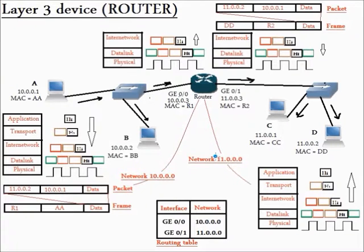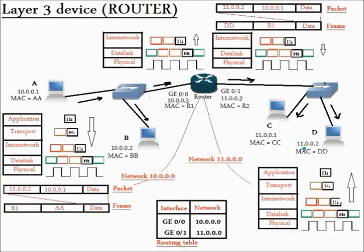In the second network, we have the router's interface Gigabit Ethernet 0/1 with IP address 11.0.0.3 and MAC address R2, and computer C with IP address 11.0.0.1 and MAC address CC, and computer D with IP address 11.0.0.2 and MAC address DD, and a hub which connects the three components with each other.